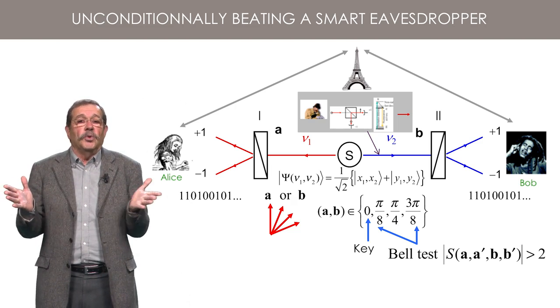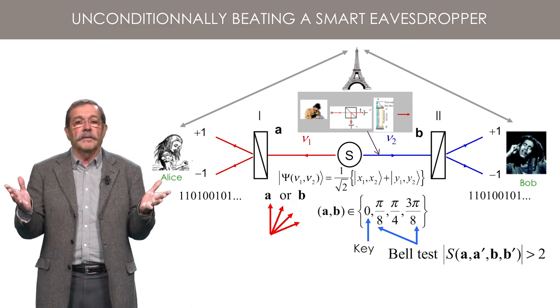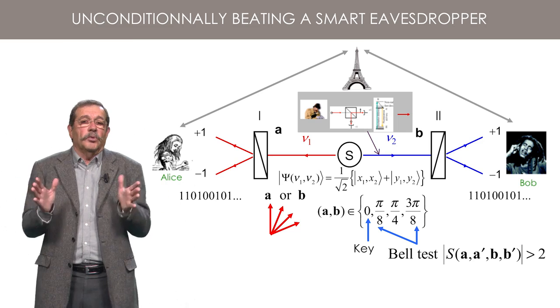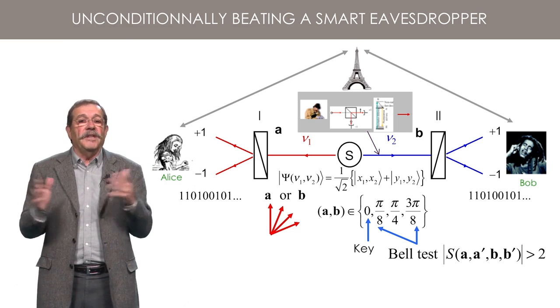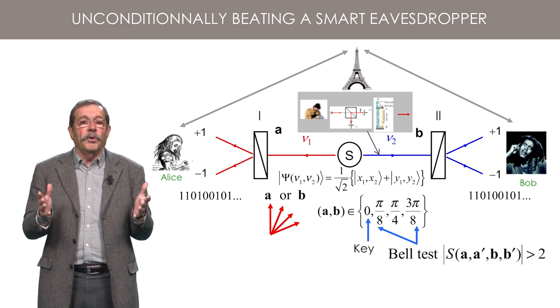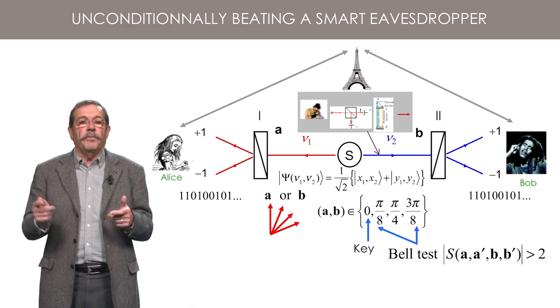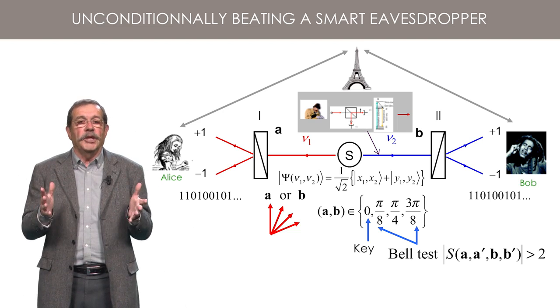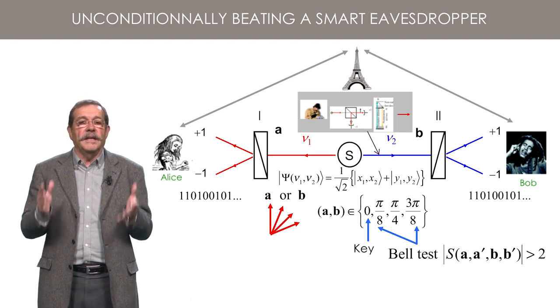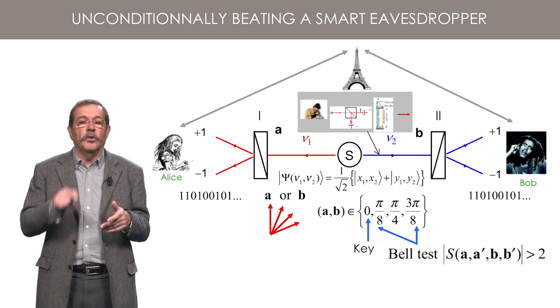You may ask then why choose the specific angles, pi over 8 or 3 pi over 8. It is not a bad idea to try these angles, but if it does not work, you can try other angles. In principle, it is enough to find one set A, A prime, B, B prime of orientations where Bell inequality is violated to be sure that no spy has a copy of the key.